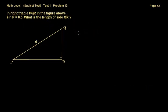Problem number 13: in right triangle PQR in the figure above, sine P is equal to 0.5. What is the length of side QR? Let me highlight this angle that we know the sine of.